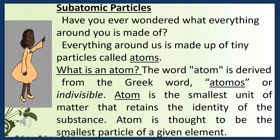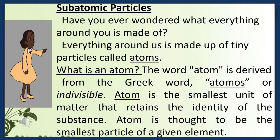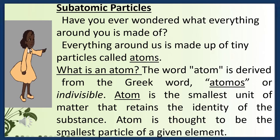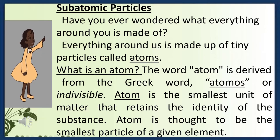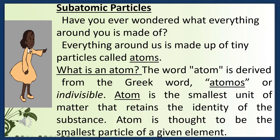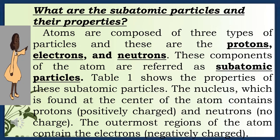Have you ever wondered what everything around you is made of? Everything around us is made up of tiny particles called atoms. The word atom is derived from the Greek word atomos, meaning indivisible. An atom is the smallest unit of matter that retains the identity of the substance, and is thought to be the smallest particle of a given element. Atoms are composed of three types of particles: protons, electrons, and neutrons.